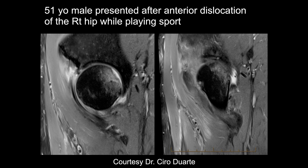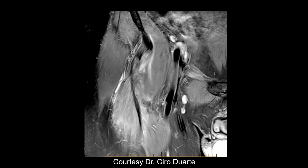A 51-year-old male presented after anterior dislocation of the right hip while playing sports. There is anterior superior labral tearing and what appear to be small paralabral cysts, along with a defect of the femoral head posteriorly — probably a Hill-Sachs-type lesion from impaction against the anterior superior labrum. What's unusual about this case is that it's an anterior dislocation, which are far less common than posterior dislocations — roughly one to nineteen in ratio — and rarely seen in practice.